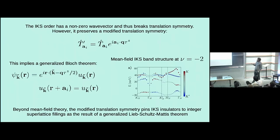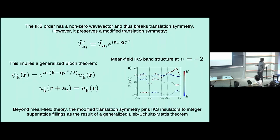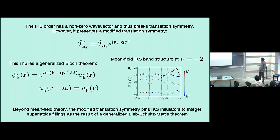IKS breaks translation — it is a finite-Q order — but it does have a modified translation symmetry T'. More precisely, T' is a combination of a regular translation by a lattice superlattice vector A_i combined with a valley U(1) rotation. In the XY picture: if you translate and then rotate all your XY vectors by some angle, this is still a symmetry of the system. Because of this modified translation symmetry, on the mean field level I can still use a generalized Bloch theorem, writing single-particle wave functions with a new quantum number K̃. This means that even though IKS breaks translation symmetry, at the mean field level it can only be insulating at integer fillings.